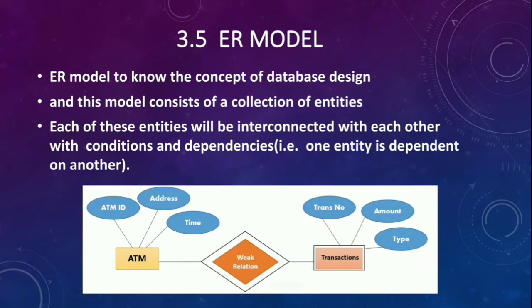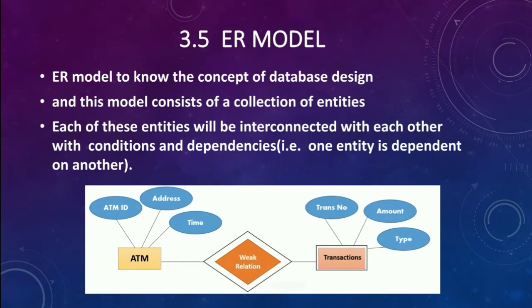ER model is a diagrammatic representation of a database design. In a database there will be multiple tables; all those tables are called entities and they have relationships with one another. We represent all the tables, their columns, and their relationships in diagrammatic form. Here is a simple example: ATM is one table and Transaction is another table, each having three columns. The relationship between them is a weak relationship.